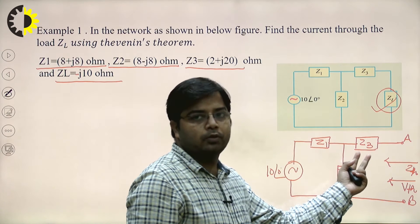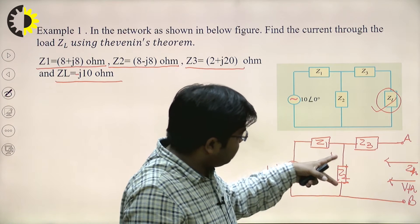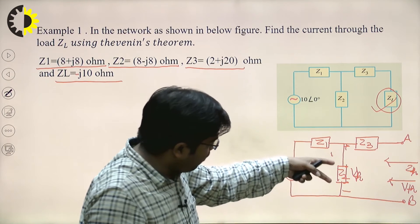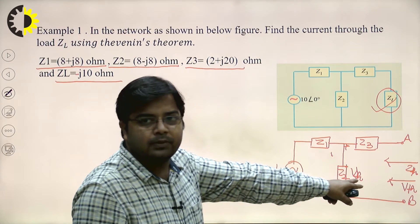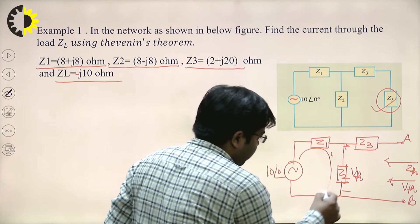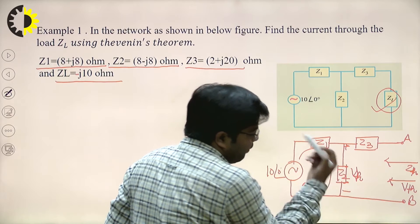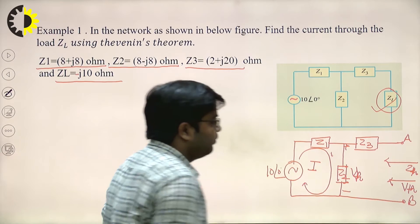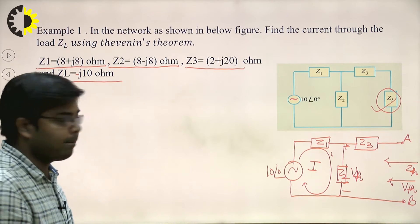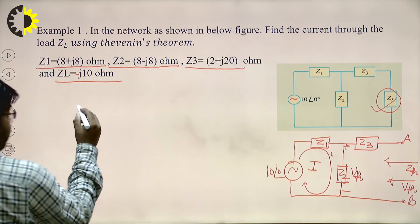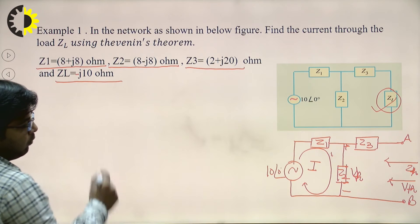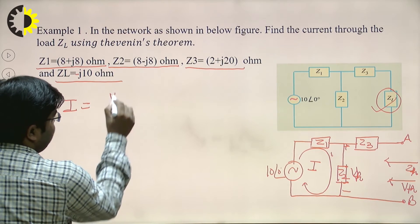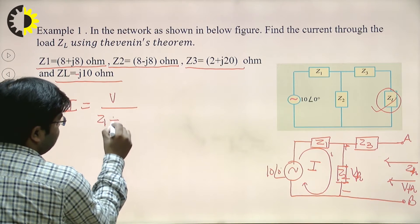V_TH will appear across impedance Z2. To find V_TH, first find the current through impedance Z2, then multiply that current value with Z2 to get V_TH. The current I is V divided by Z1 plus Z2, which is 10 at angle 0 divided by (8 + j8) + (8 − j8).